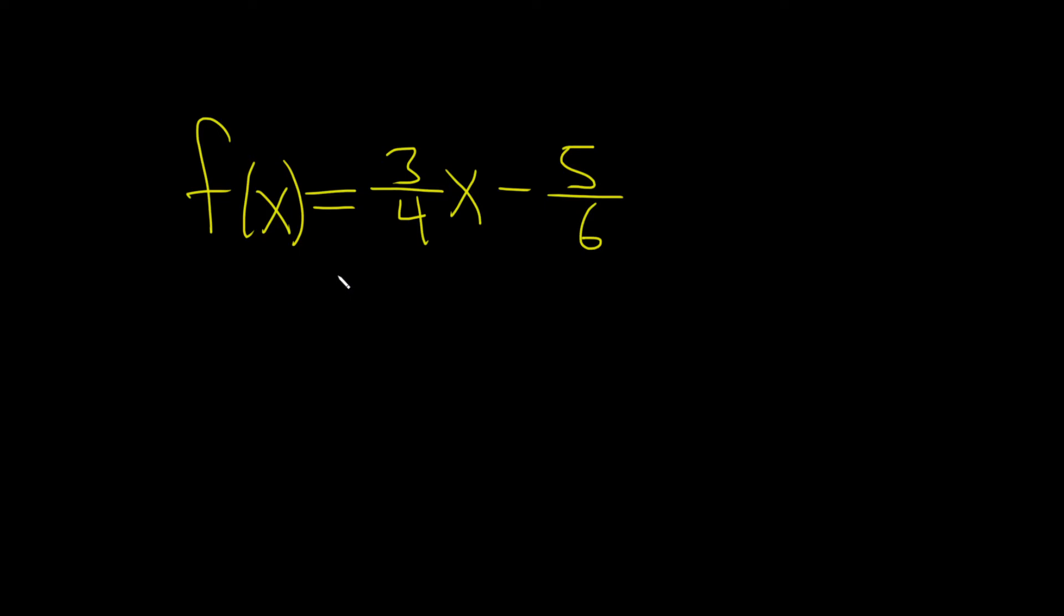In this problem we're going to find the inverse of this function. So the first step when finding the inverse of a function is to replace your function with y. So y equals 3 over 4 times x minus 5 over 6. Just rename it to y.